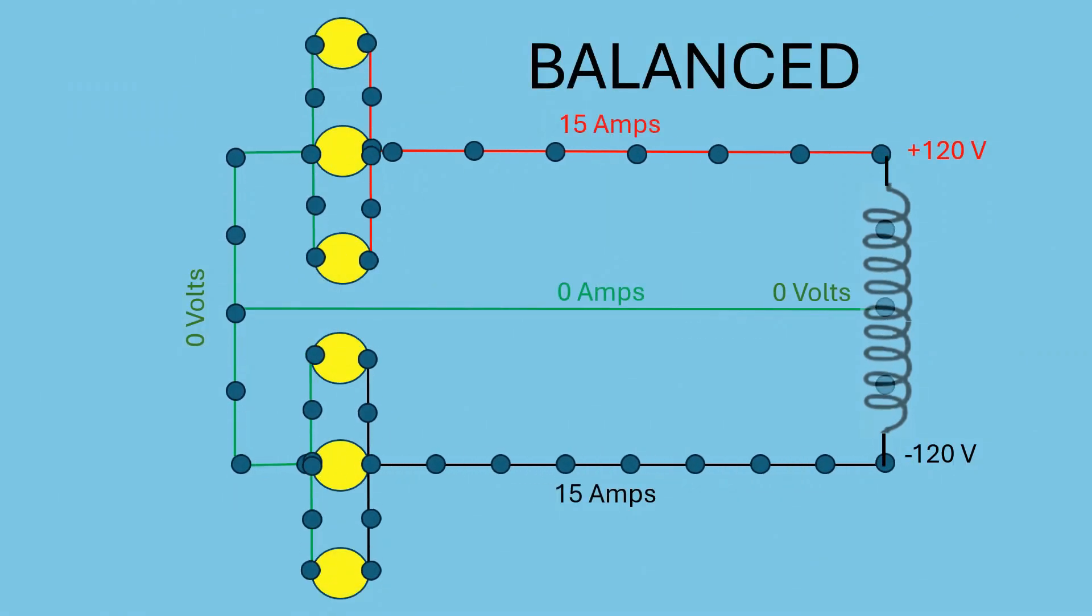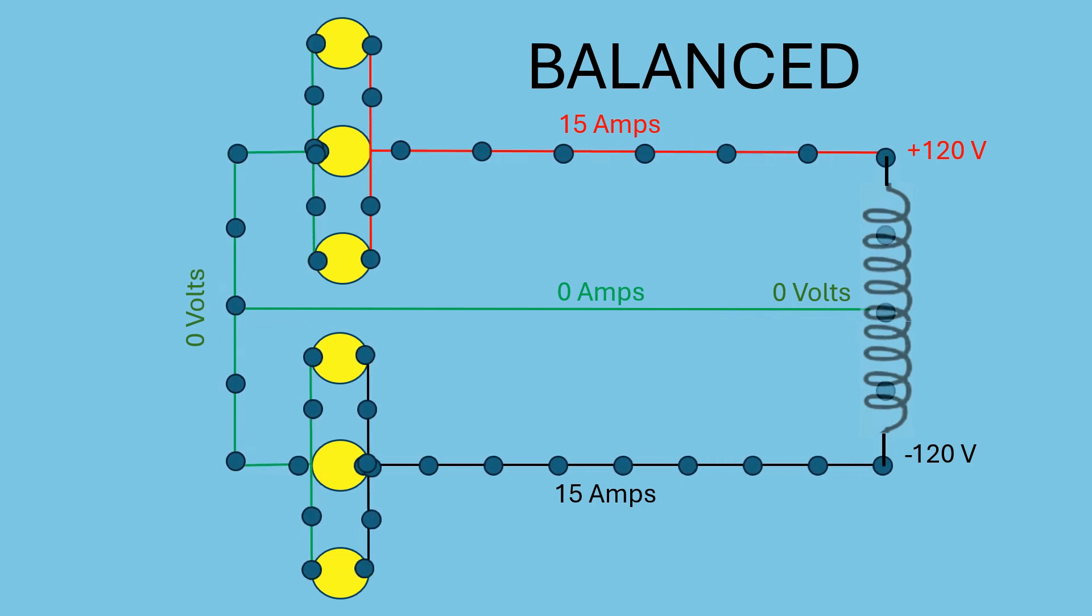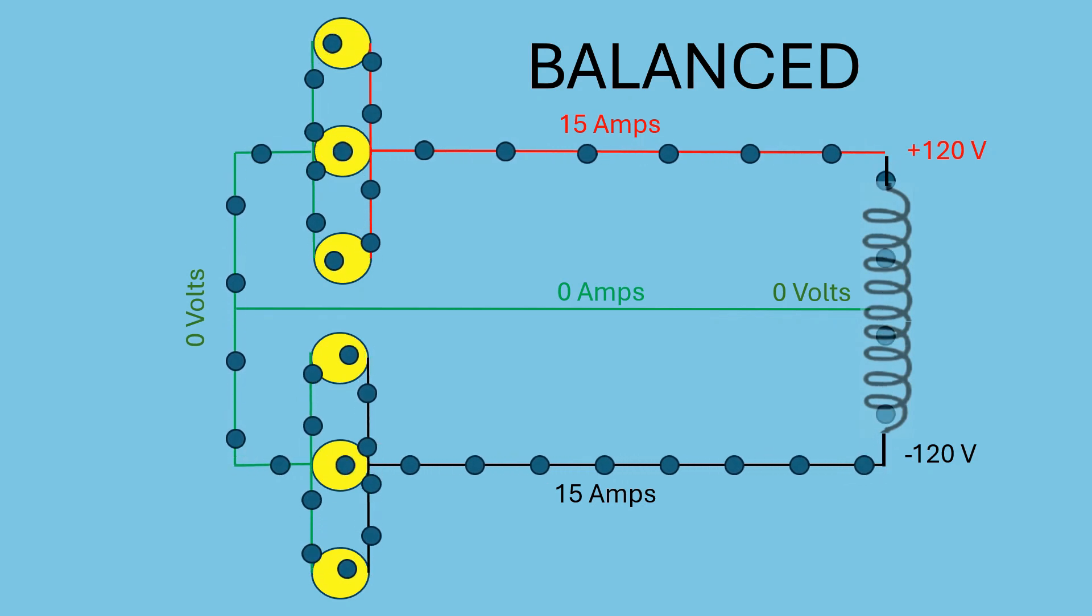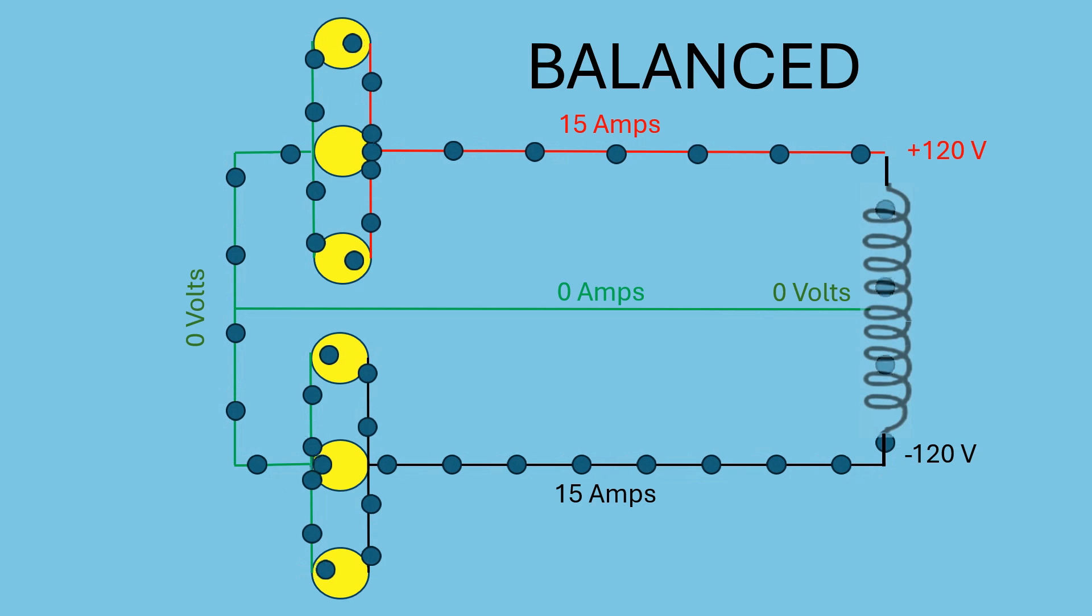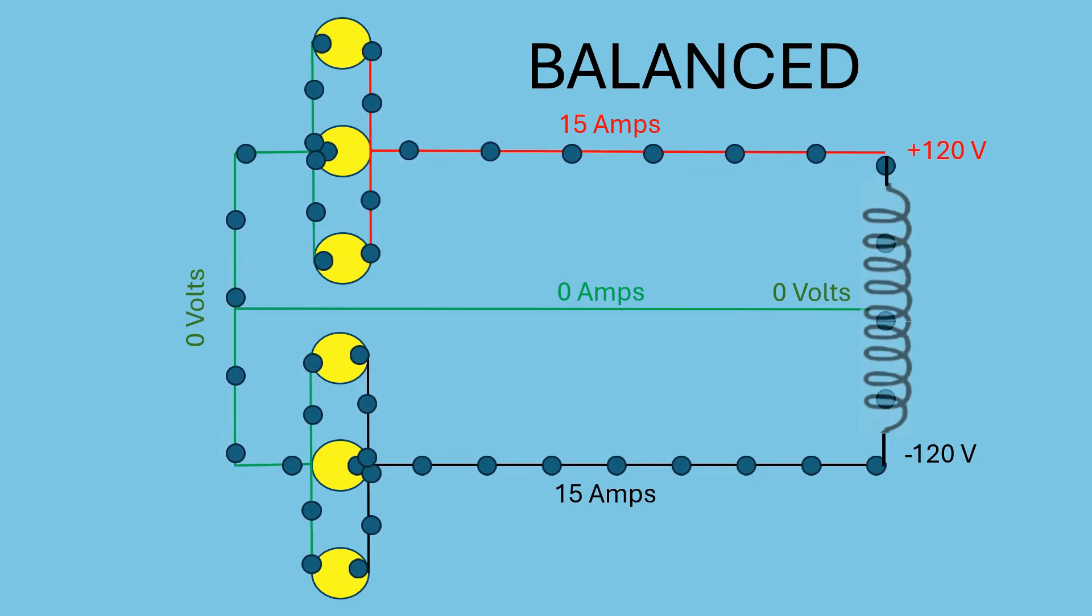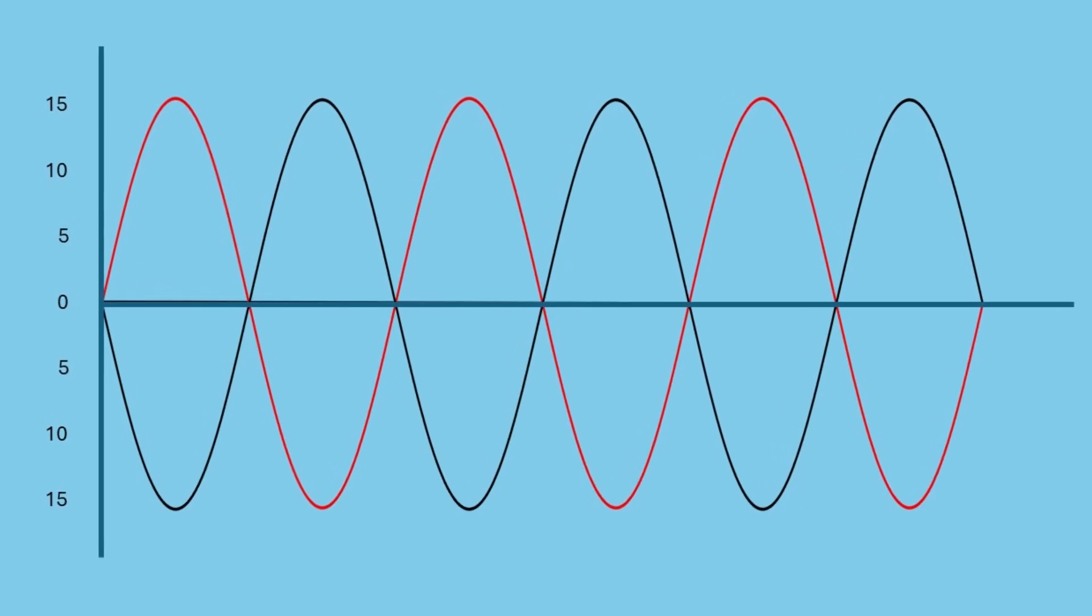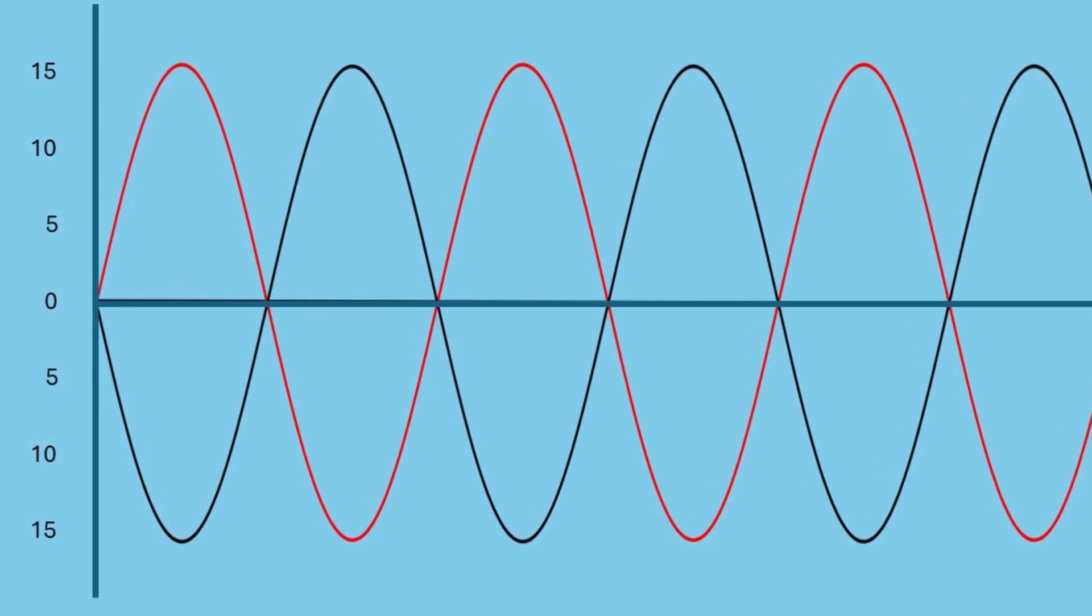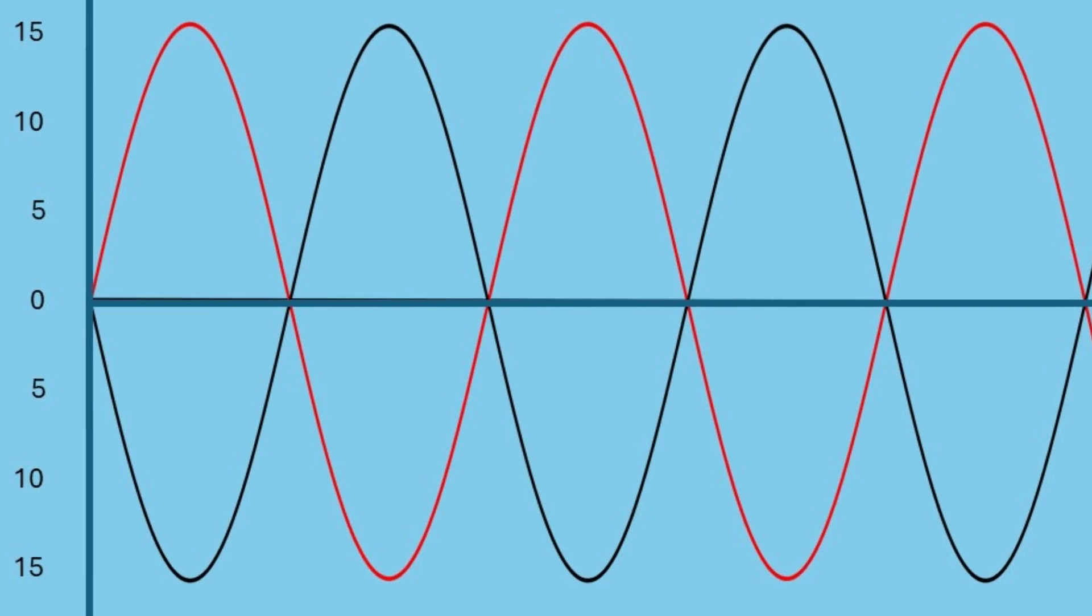All right, let's take a closer look at the function of the neutral wire on 120 volt circuits. Here's a circuit with three loads running on each leg. The circuit shows 15 amps of current on each leg, but there's nothing on the neutral wire. Why is this? Because current flows from one leg to the other and back. They balance each other out, so nothing flows on the neutral wire. Here's a graph showing the current flowing on leg one and on leg two. And you can see that the two currents match each other exactly in opposite directions, so you don't have anything on that neutral wire.